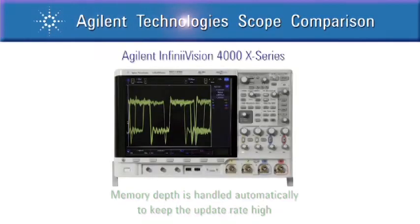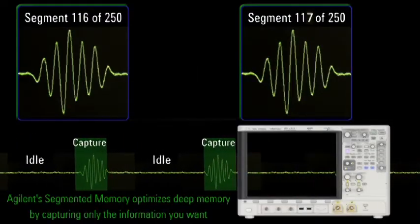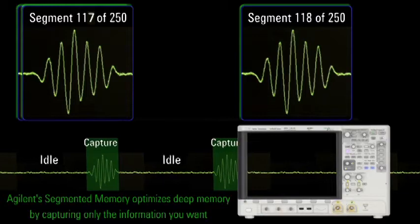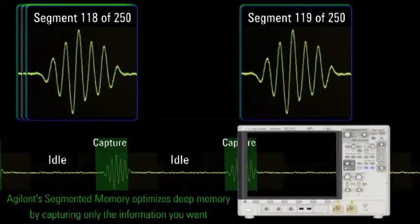InfiniVision scopes handle memory depth automatically to keep performance high. Additionally, Agilent uses smart memory technology to capture only information you're looking for and ignore relevant data in between.